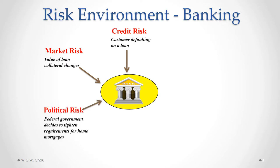Political risk is also something a bank has to consider. Banking is generally very highly regulated by the federal government. Not too long ago, for example, the federal government decided to tighten the requirements for making home mortgage loans, and that obviously has an effect on the business of a bank.